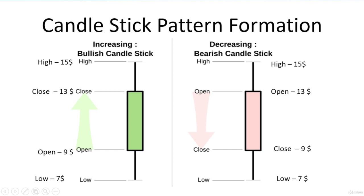On the other hand, we see an opening price of $13 and a close price of $9, with low of $7 and high of $15. Since close ($9) is less than open ($13), it is a negative pattern — also called a bearish candlestick pattern. Remember: bullish or bearish depends on the opening and closing of the candlestick.